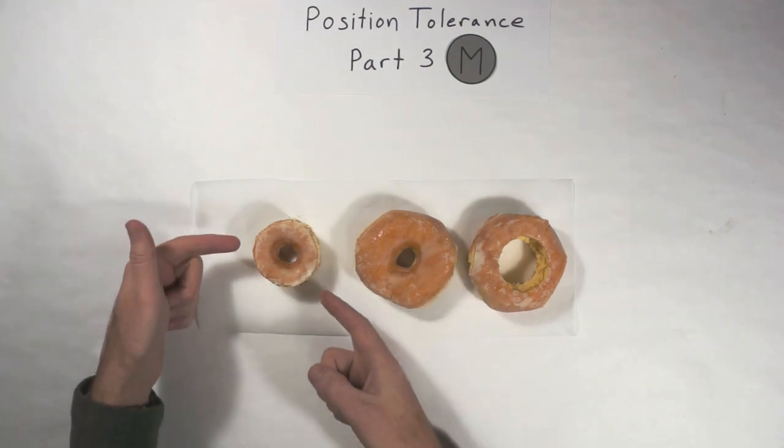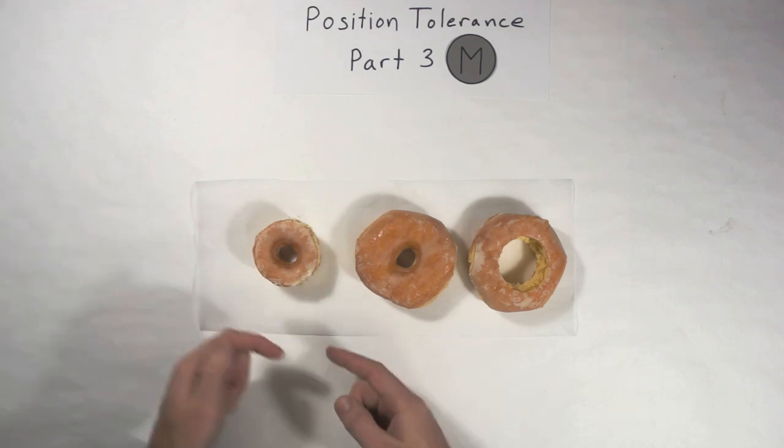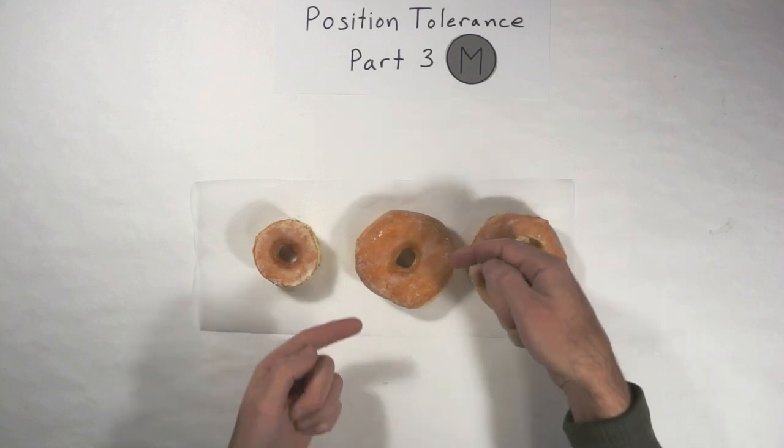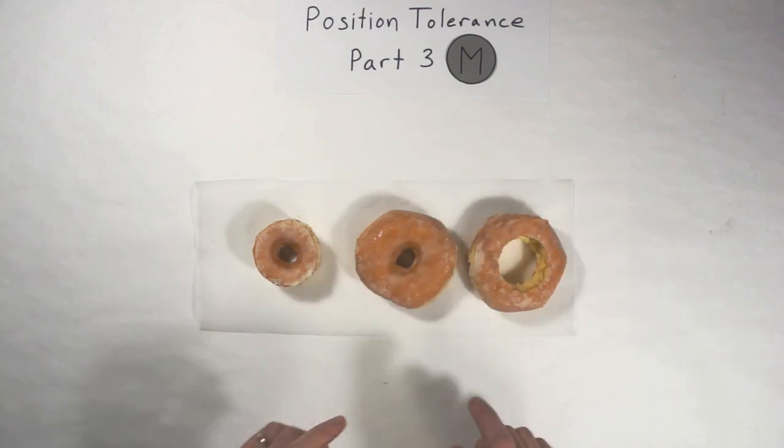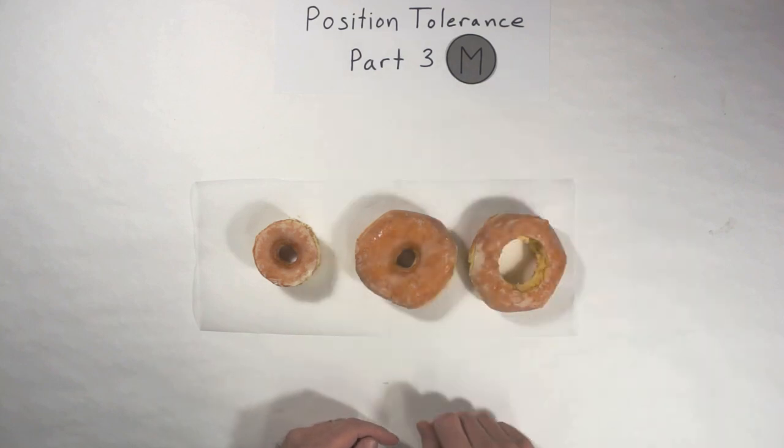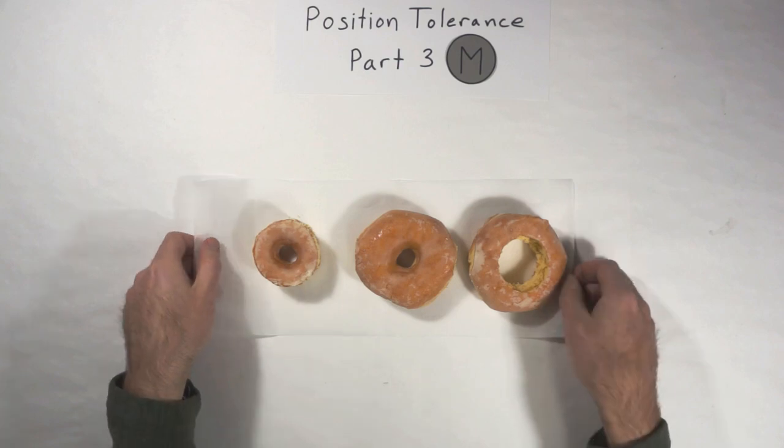So the outside, the circle M means the biggest. And on the inside, the circle M means the smallest hole. Biggest peg, smallest hole is the circle M, okay? So when you see that, think of the doughnut example. So let's set those aside.